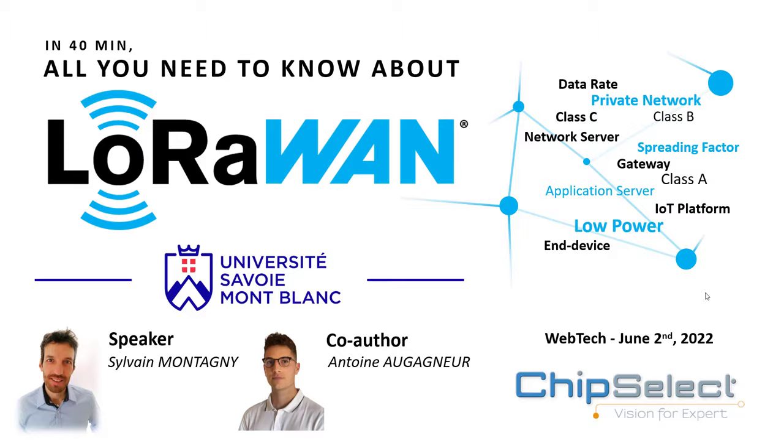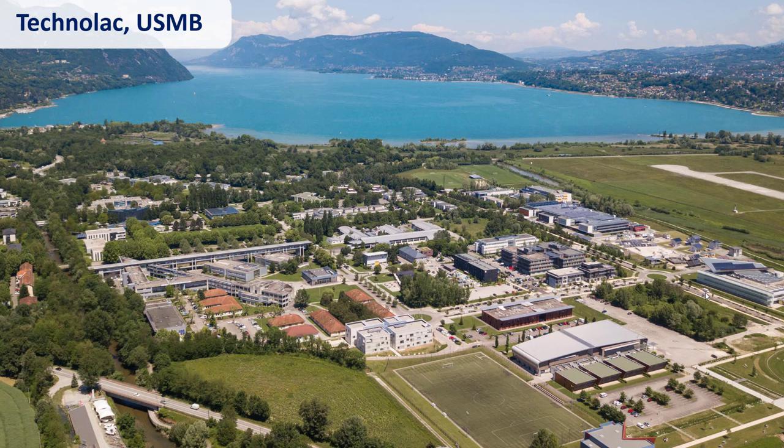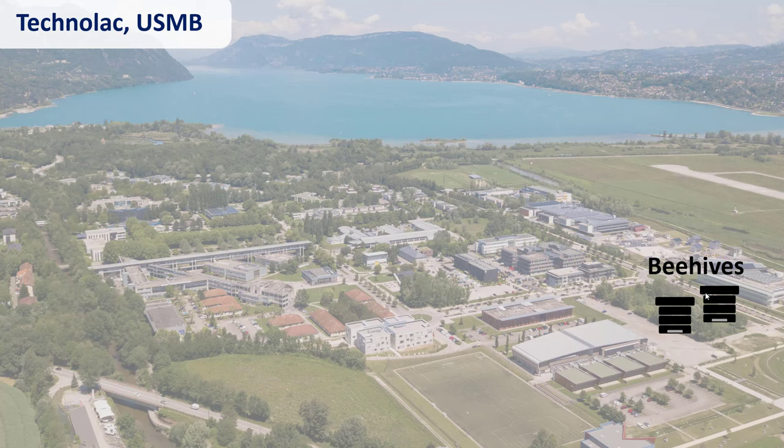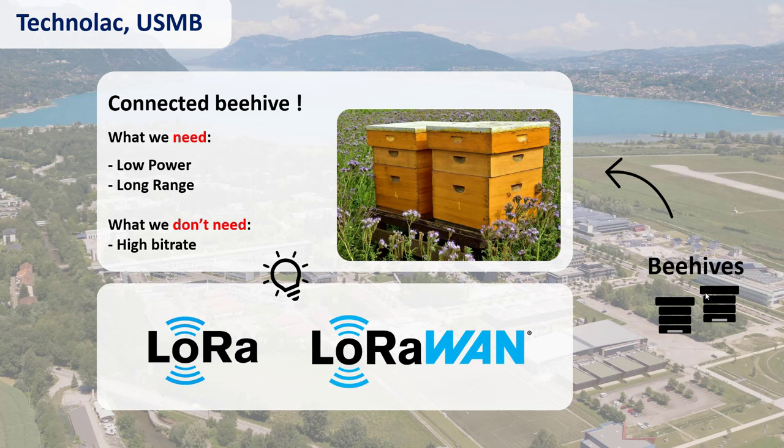That's the university campus around Chambéry. A few years ago we wanted to launch a new project — a very common project in universities nowadays — which is to connect beehives. To connect these beehives, we had a few requirements. First, we wanted to place them somewhere on campus without any electrical sources, so the systems had to be battery-powered and low power. Second, we had no access to the campus Wi-Fi network, so we needed long-range transmission. And we found we only needed to send a few bytes per day, so no high bit rate was required.